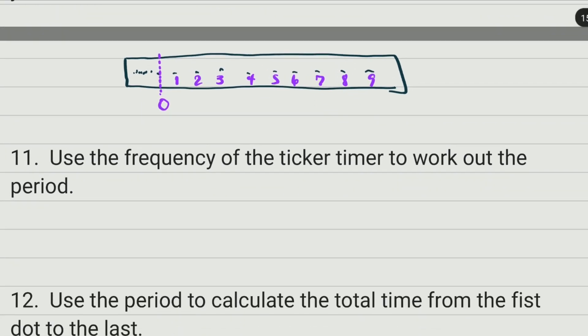Use the frequency of the ticker timer to work out the period. Remember, period equals one divided by frequency. The ticker timer we're going to use has two different frequencies: 25 and 40.